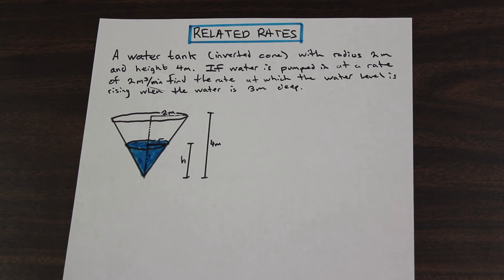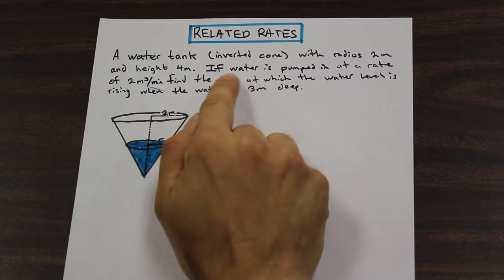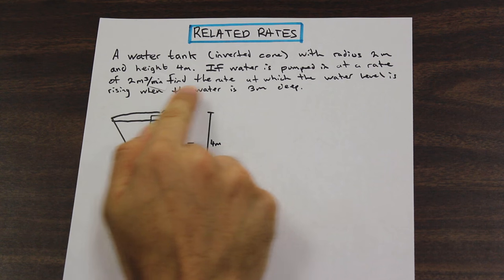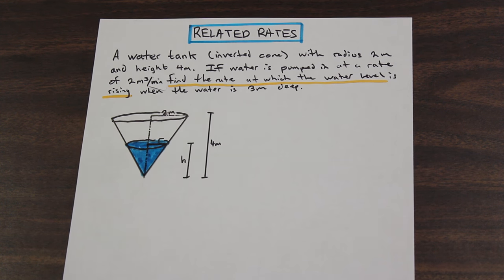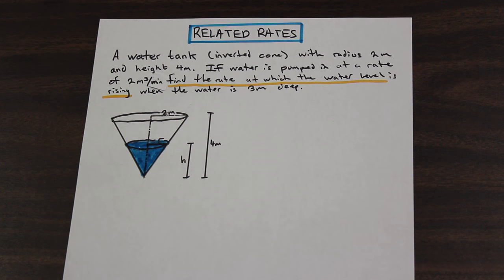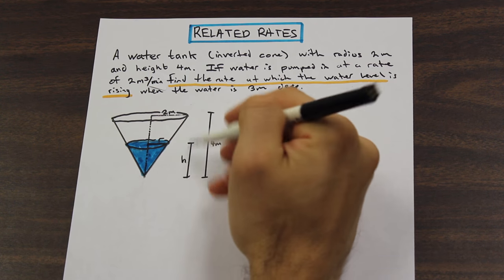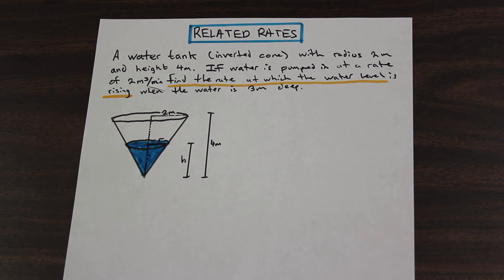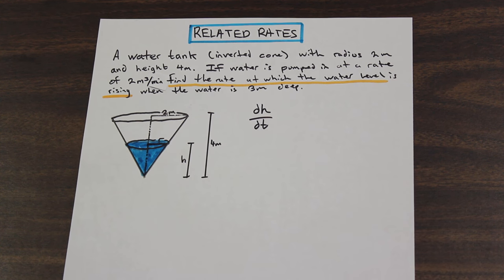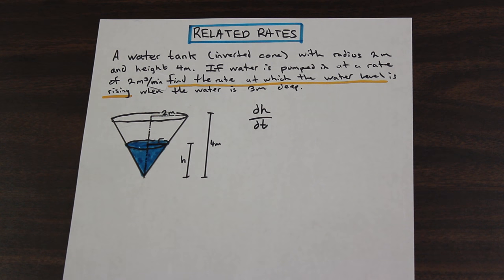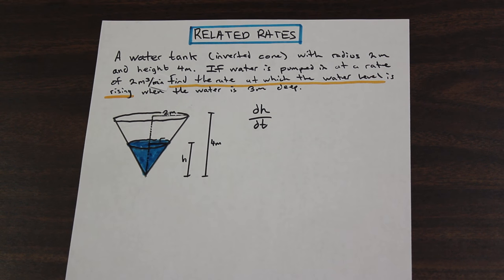How do we solve these types of questions? First, don't panic. There are a lot of different variables, but the best thing to do is understand what it is that we're looking for. The question asks us to find the rate at which the water level is rising — that's how the height of the water is changing with respect to time. In calculus terms, we write that as DH/DT, the derivative of H with respect to T.